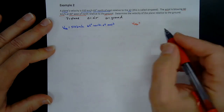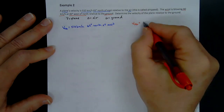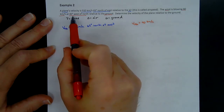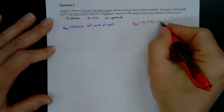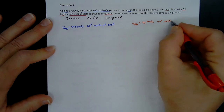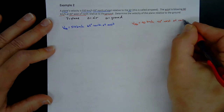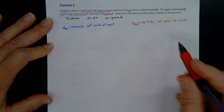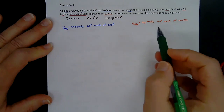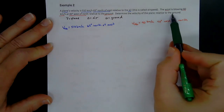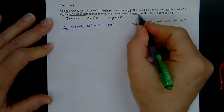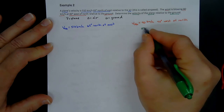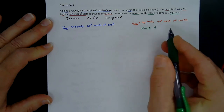The wind velocity is V sub AG, which equals 90 kilometers per hour at 40 degrees west of north. We want to find V sub PG — the velocity of the plane relative to the ground. All three are related: V sub PG equals V sub PA plus V sub AG.